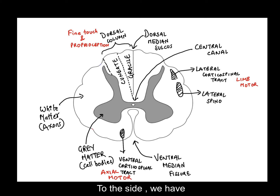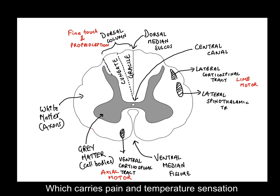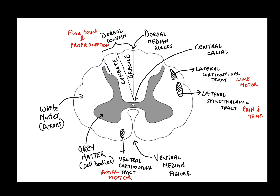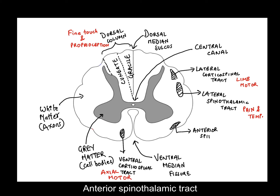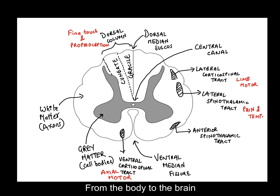To the side we have the lateral spinothalamic tract, which conveys pain and temperature sensation. At the front we have the anterior spinothalamic tract, which carries crude touch sense from the body to the brain.